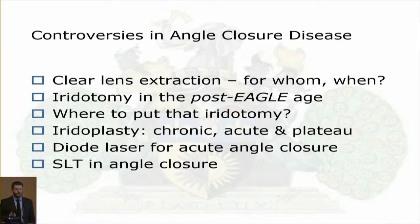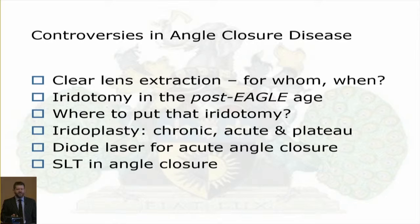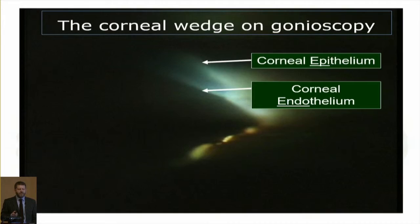I'll cover: clear lens extraction, for whom and when; iridotomy after the report of the EGLE trial; where to place that iridotomy if you decide to do one; iridoplasty, whether we should do that at all and for whom; brief mention of diode laser for acute angle closure; and SLT in angle closure — should we be doing that at all, and is there an evidence base?